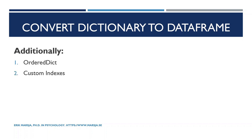We'll also cover how to create custom indexes in the data frame, how to skip data when creating the data frame from the dictionary, and finally how to change the orientation of the data frame — making columns into rows using the from_dict method from the pandas data frame constructor. As usual, there are links in the description below, including a Jupyter notebook with all the code examples and a link to a blog post describing all three steps.